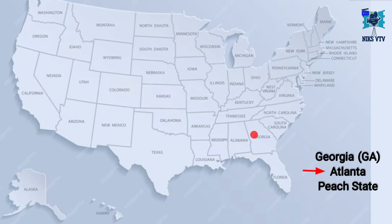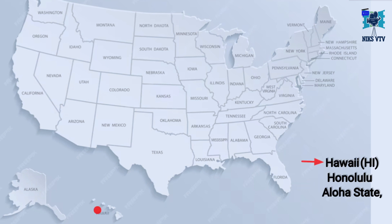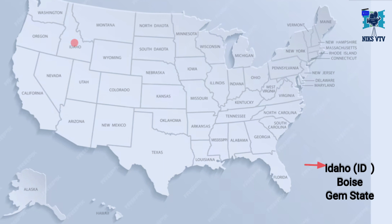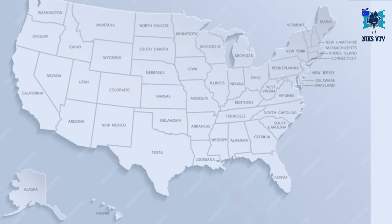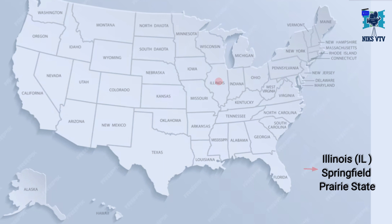Next state is Georgia, abbreviation is GA, capital is Atlanta, time zone is EST, and nickname is Peach State. Next is Hawaii, its abbreviation is HI, capital is Honolulu, its time zone is HST — Hawaii Standard Time Zone — and its nickname is Aloha State. Next state is Idaho, its abbreviation is ID, its capital is Boise, its time zone is PST, and its nickname is Gem State.